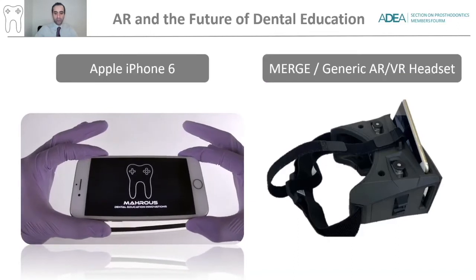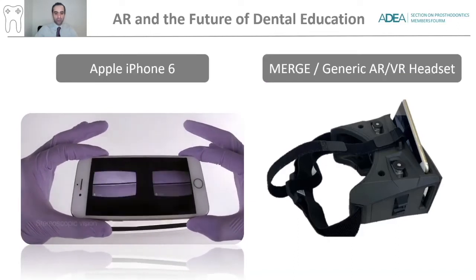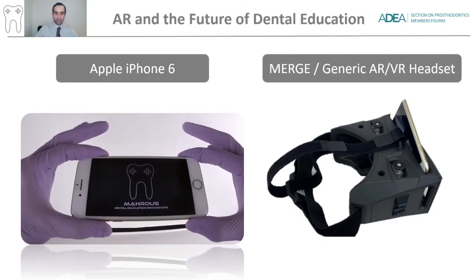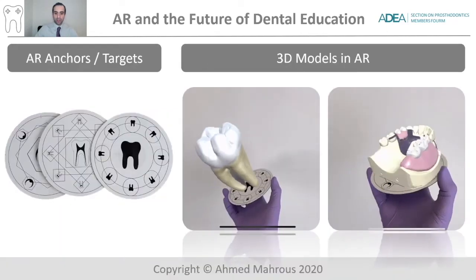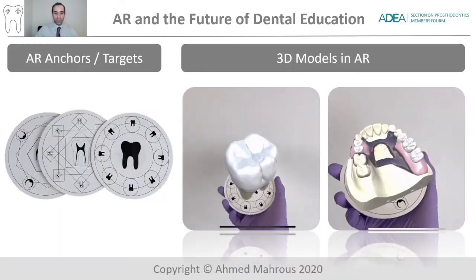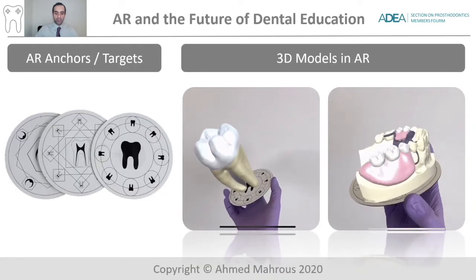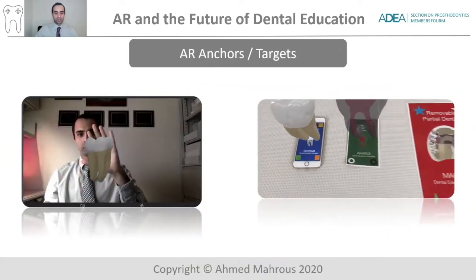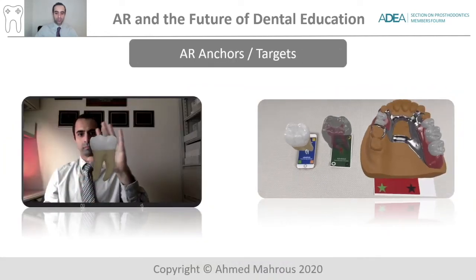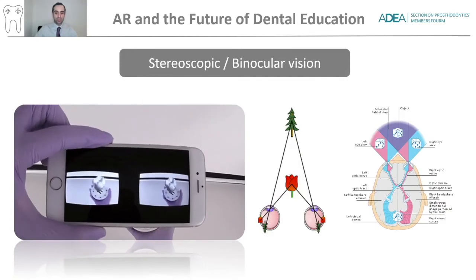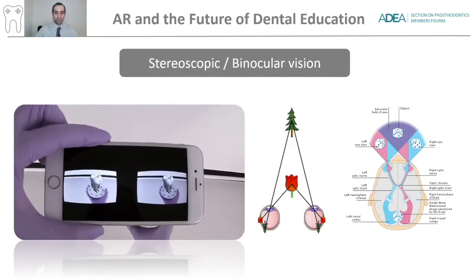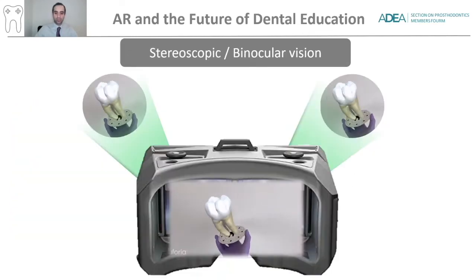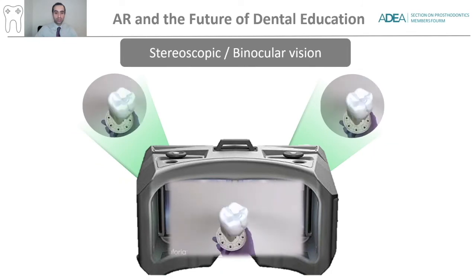In this video, you saw the application running on an iPhone used alongside a generic AR/VR headset. The application uses AR anchors to control the 3D models. In the video, the anchors were diagrams on a disk. Those anchors can also be set on your hand or on pictures on a phone. The application imposes a stereoscopic view to allow for realistic depth perception, with two images that come together in the brain to create a true 3D image.